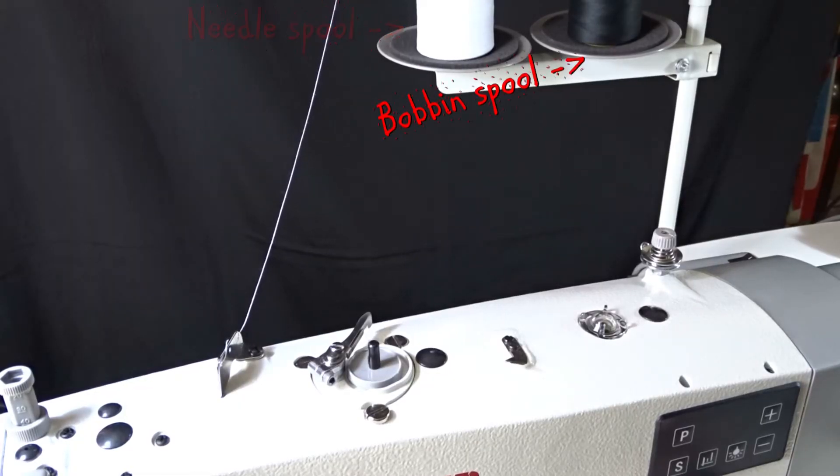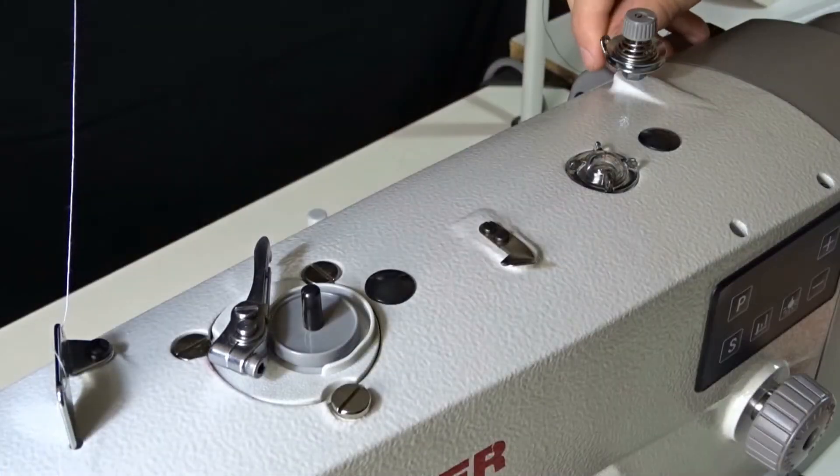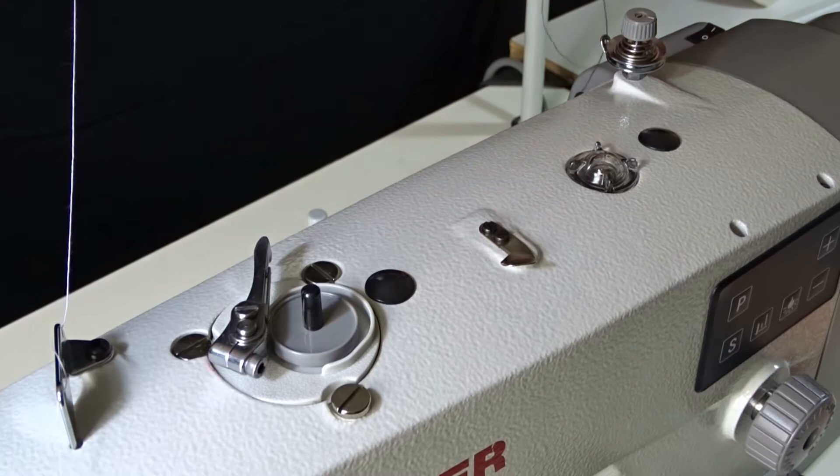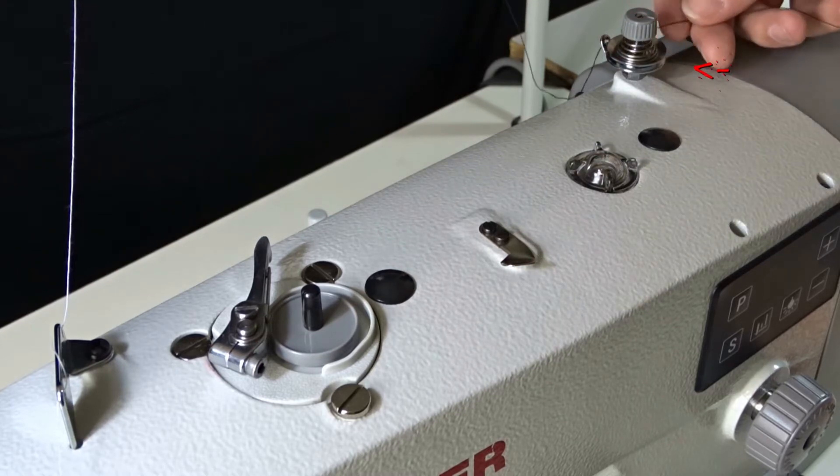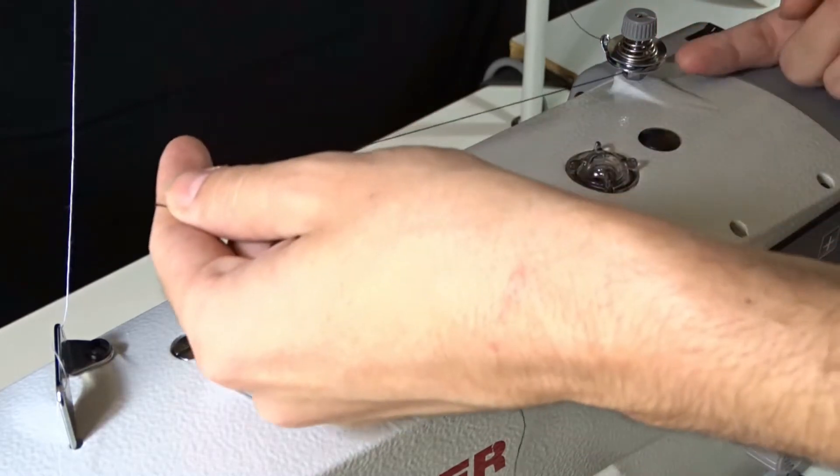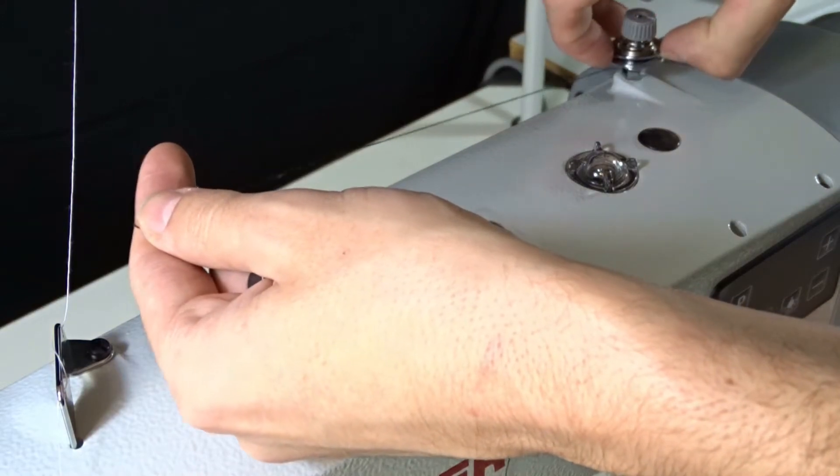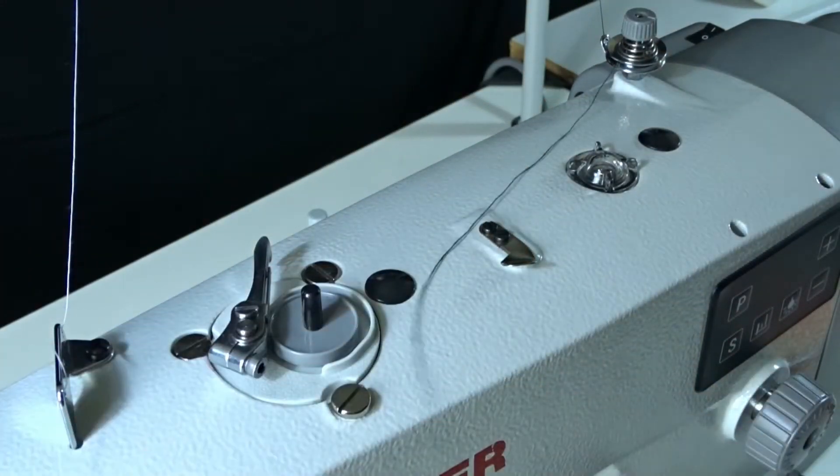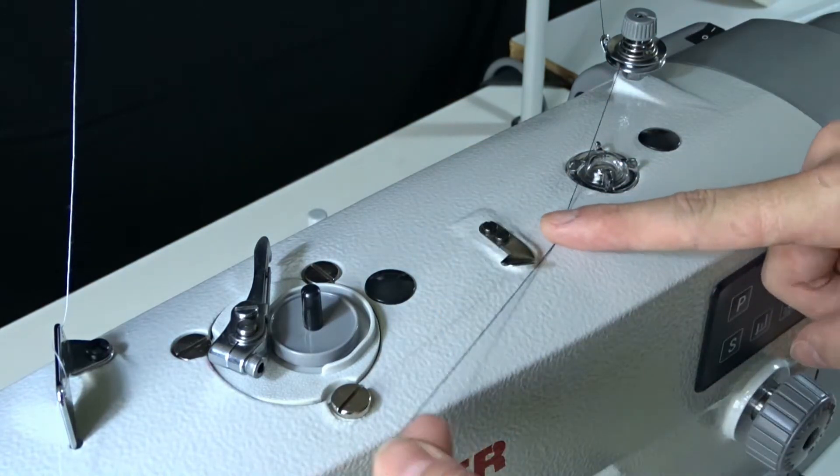Take the hanging thread from the right spool and pass it through the hole near the tension discs. Then pass it between them. The thread should pass under the metal guide.